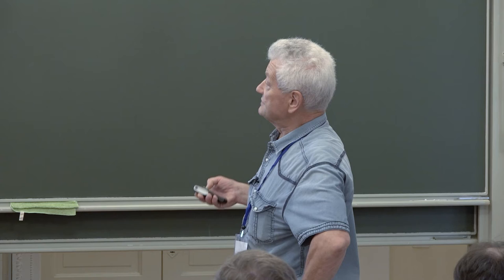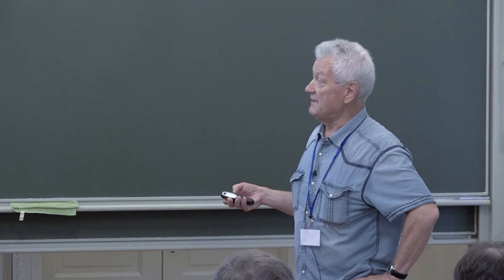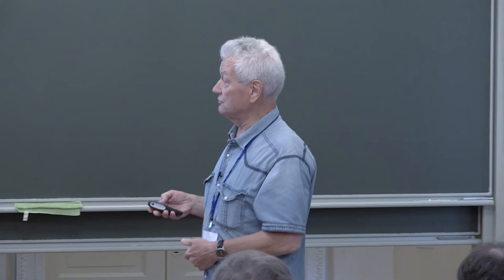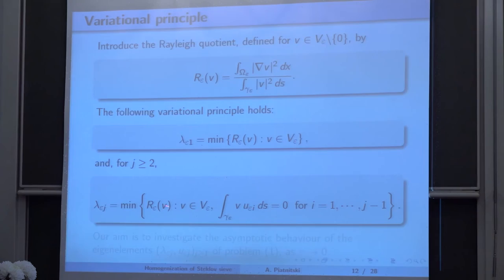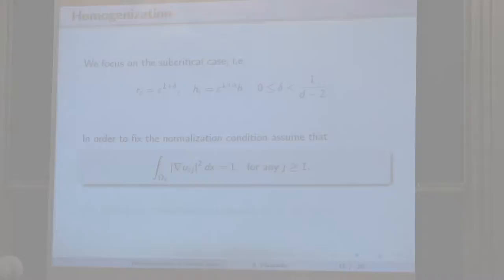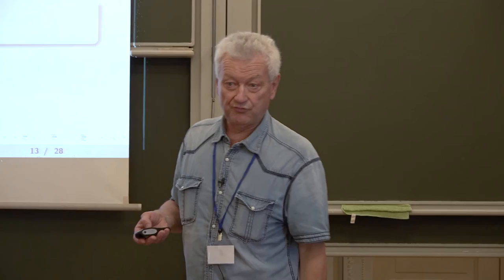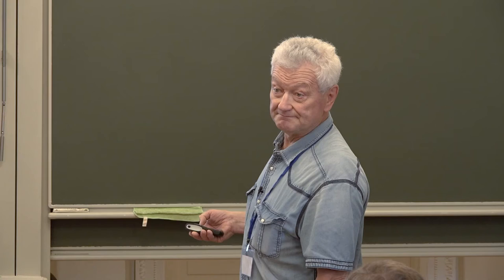There is a variational principle: if we introduce the Rayleigh quotient, the first eigenvalue is obtained as the minimum over the whole space, and other eigenvalues are obtained as the minimum of the same quotient under orthogonality conditions. For each epsilon we have a sequence of eigenvalues and eigenpairs, and we use a normalization condition.